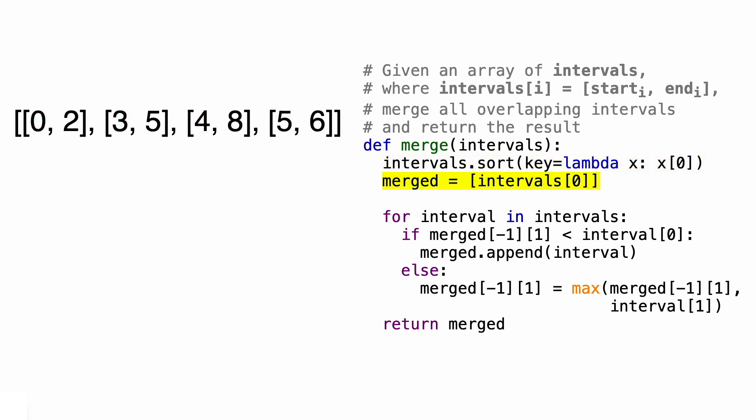We're then going to create a new list called merged, and initialize it with the first interval in the intervals list. So that's going to be 0, 2. Merged is going to be the list that contains our final answer. Then we'll loop through the intervals list using a variable called interval, and start merging. And we're going to use the same logic as we discussed before. If the ending value of the first interval is less than the starting value of the second one, then there's no overlap and we simply append the second interval to our answer.